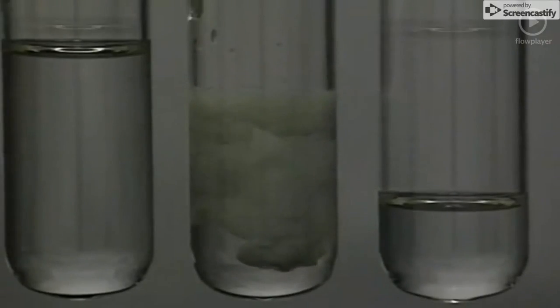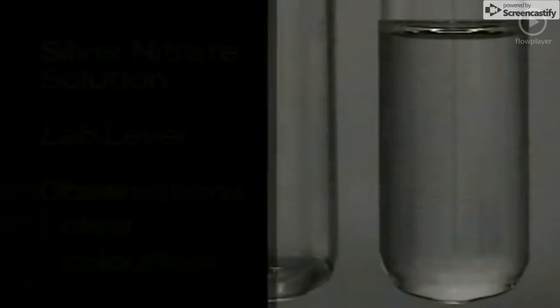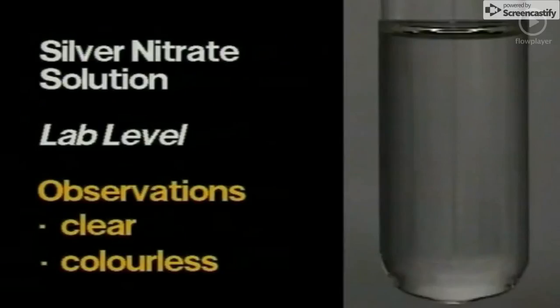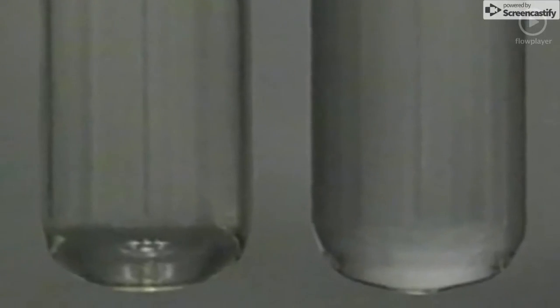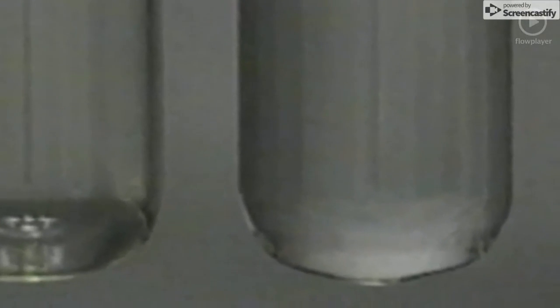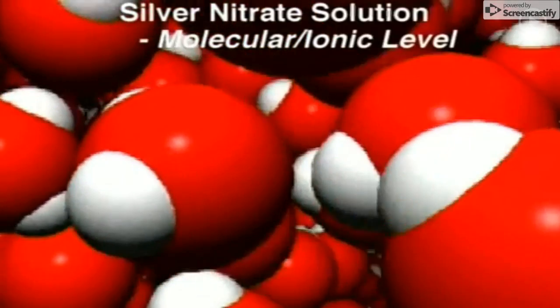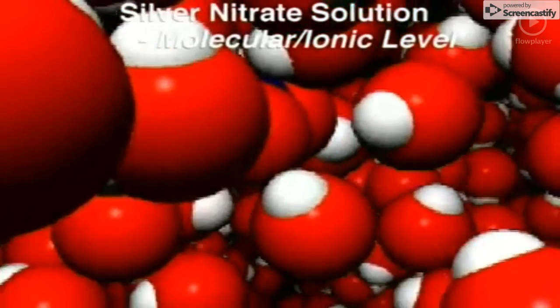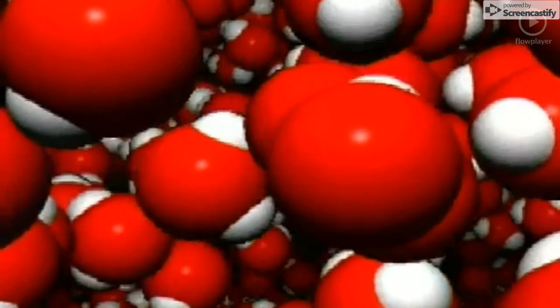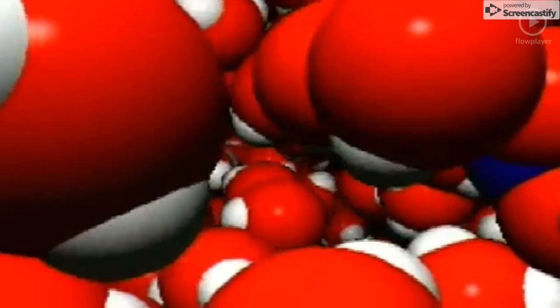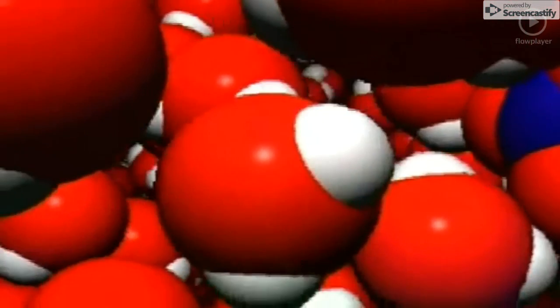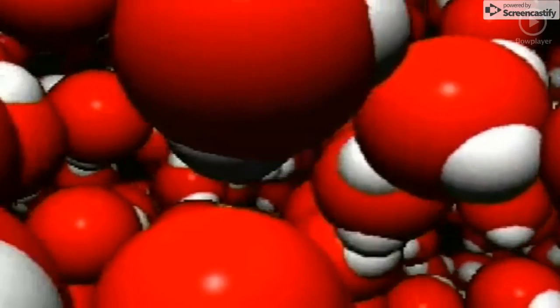To understand what happens, let's look at aqueous silver nitrate, a clear, colourless liquid. At the molecular ionic level, the negatively charged nitrate ions occasionally collide with the positively charged silver ions, here coloured pale blue.